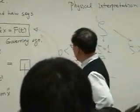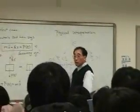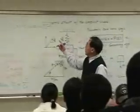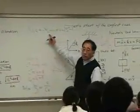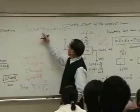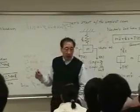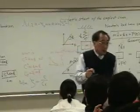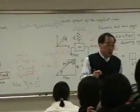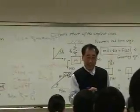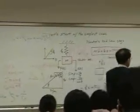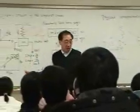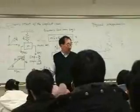Okay, so what if zeta is 0? If zeta is 0, then lambda 1, 2 is plus minus j omega n. That's the case of free vibration without damping. Okay? So essentially, this covers every single case.